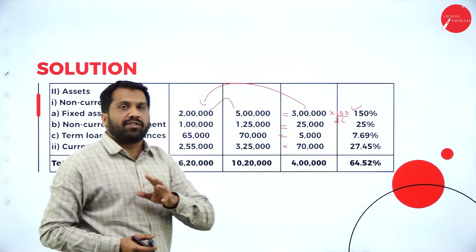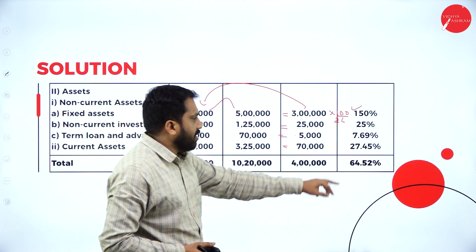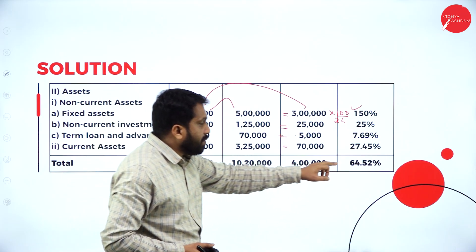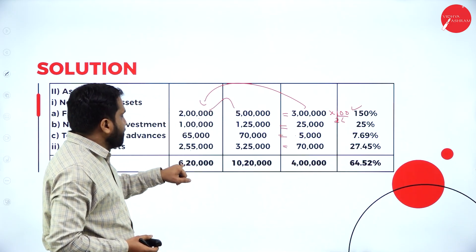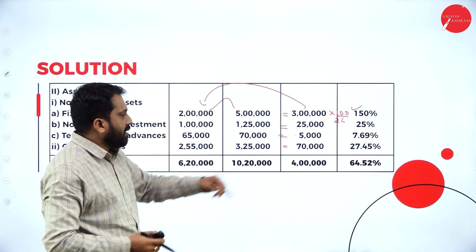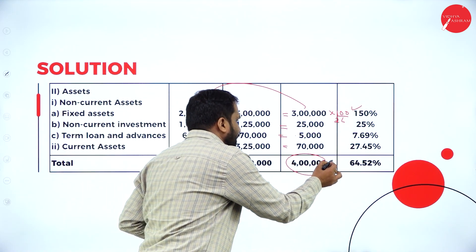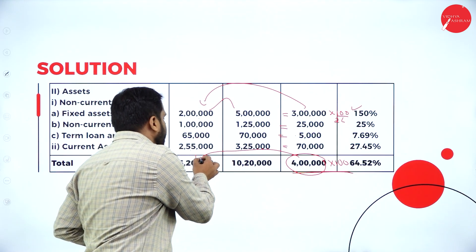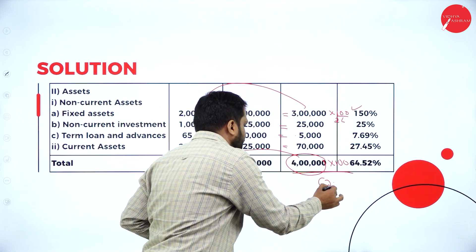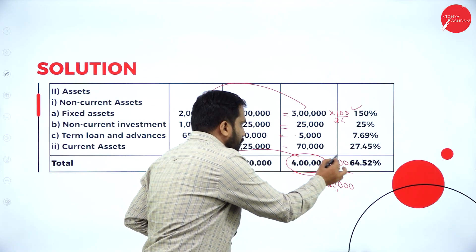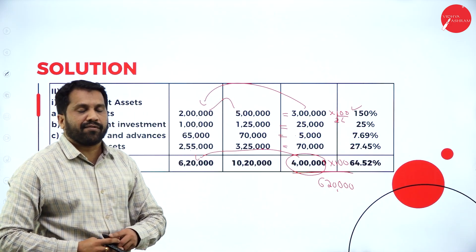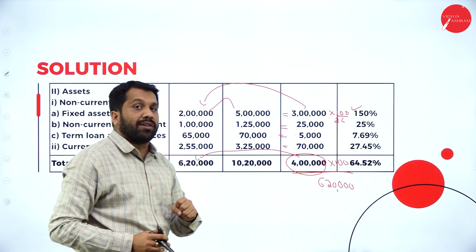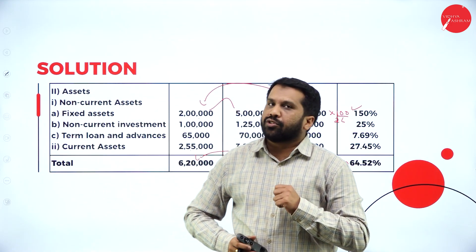Every student makes the same mistake. This is not a total of your percentage — this has to be calculated individually. 6 lakh and 10 lakh 20 — the difference is 4 lakh. 4 lakh into 100 divided by the first column value of 6 lakh 20,000 gives you 64.52%. Hope you are clear with this. This is called the comparative balance sheet.